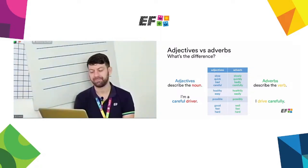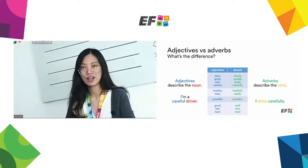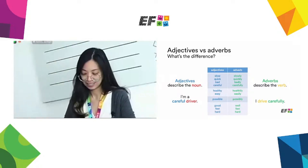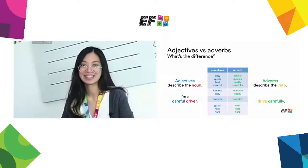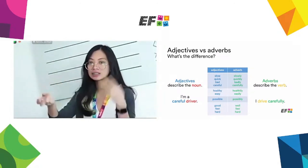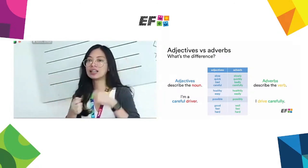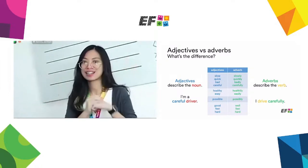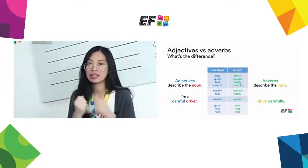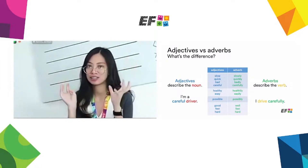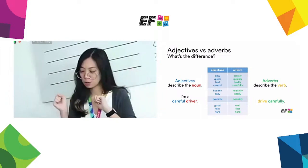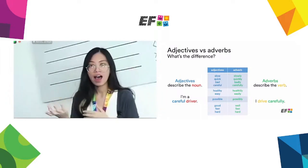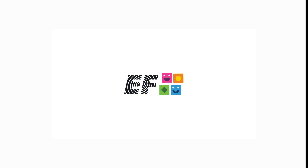Okay, jadi gitu gampang ya. Singkatnya, adjective menjelaskan kata bendanya, kayak barang, orang, benda. Dan kalau adverb menjelaskan kata kerja, atau action-nya apa — itu dikasih tahu dia pelan, atau dia sehat, atau lain-lain.